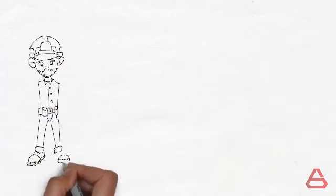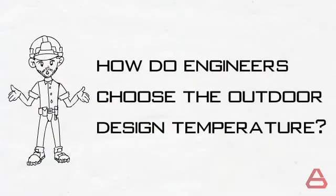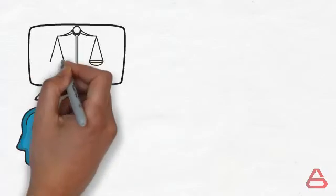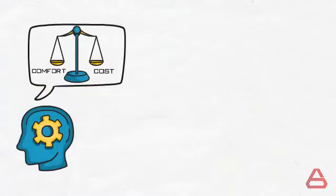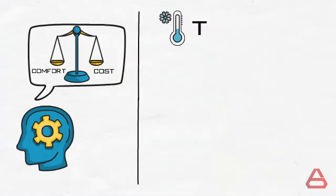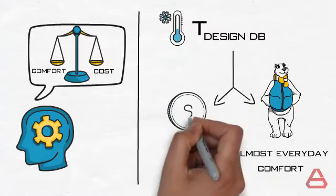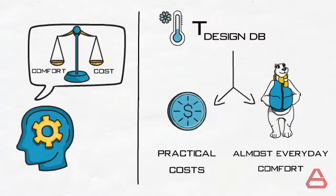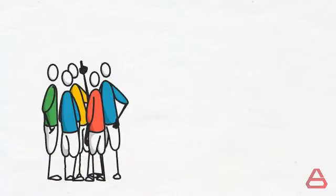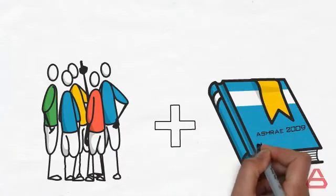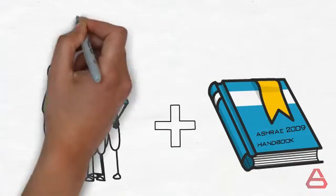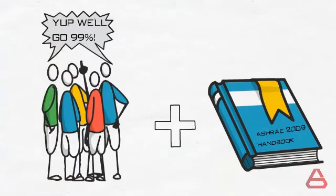So how then do engineers choose the outdoor design temperature? Engineers need a number that would work best from the comfort to cost perspective. The design value should provide almost everyday comfort at practical operation costs. It is common practice between engineers and also as per the ASHRAE 2009 handbook to use the 99% dry bulb design temperature in the winter season.